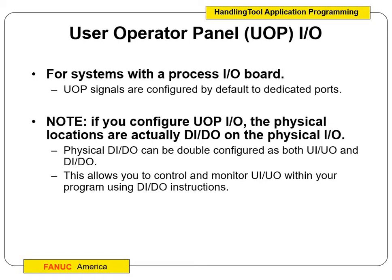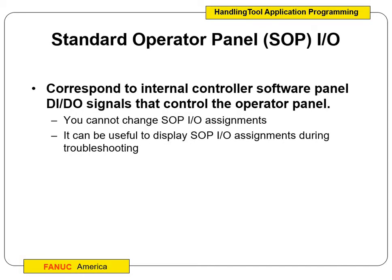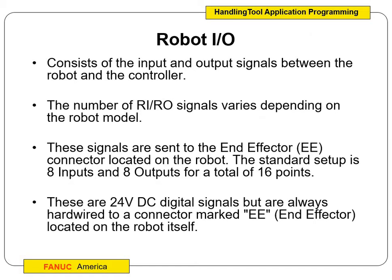Still with the user operator panel — they're configured by default to dedicated ports. If you configure the user operator panel I/O, the physical locations are actually the digital inputs on the physical input and output. So when you open up the panel and look at the card, they are literally the ones right there. Standard operator panel: you cannot change the I/O assignments — they are what they are. On the user one, you can change it around, but this one's kind of defaults and built in. This is what you get and this is what you have to wire up to if you choose to.